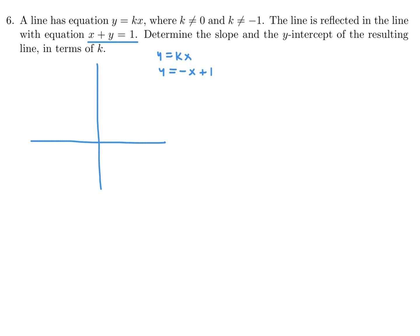I don't know whether k is positive or negative, so I'll just guess for illustration — something like this for y equals kx. For y equals minus x plus 1 we know the intercepts: both x and y intercepts are 1, so that line goes like this. Now, this green line y equals kx is going to be reflected in the black line, and we want the slope and y-intercept of the resulting line.